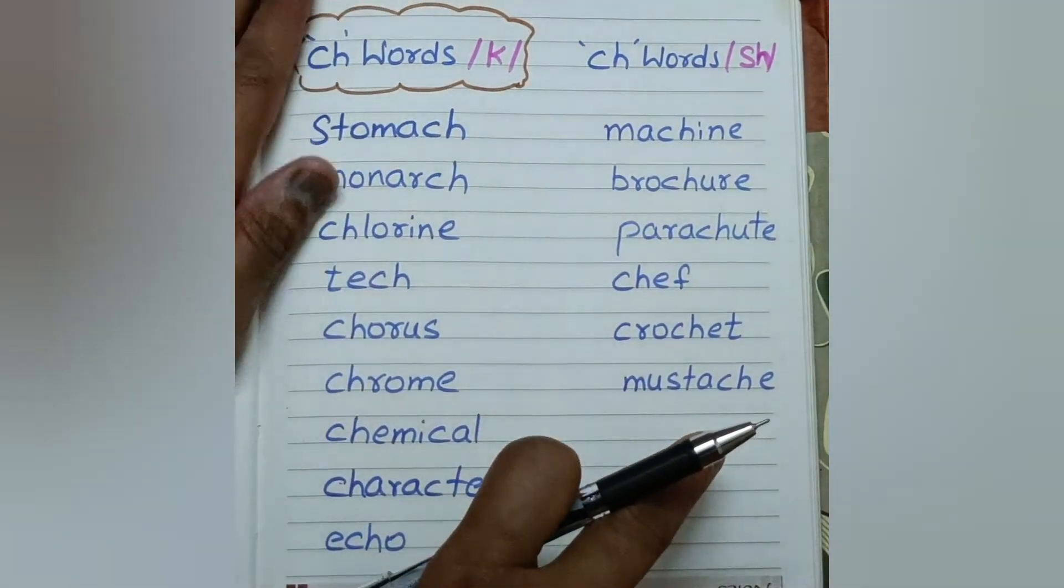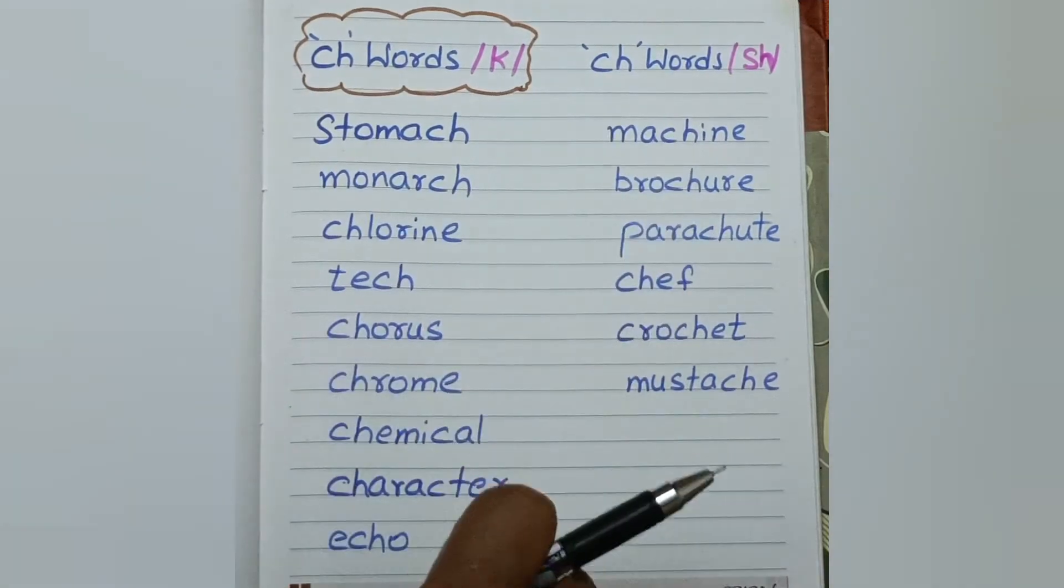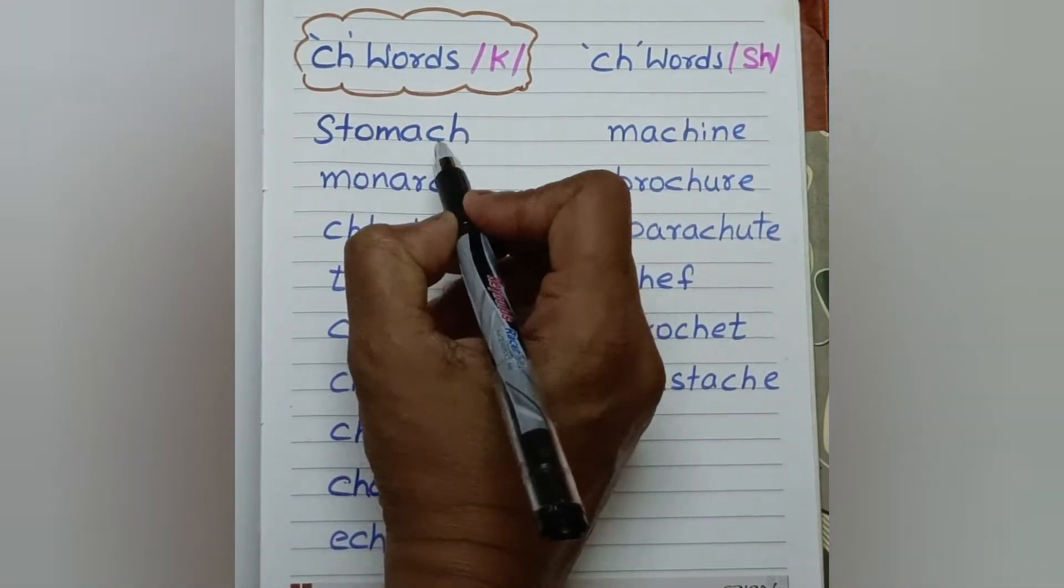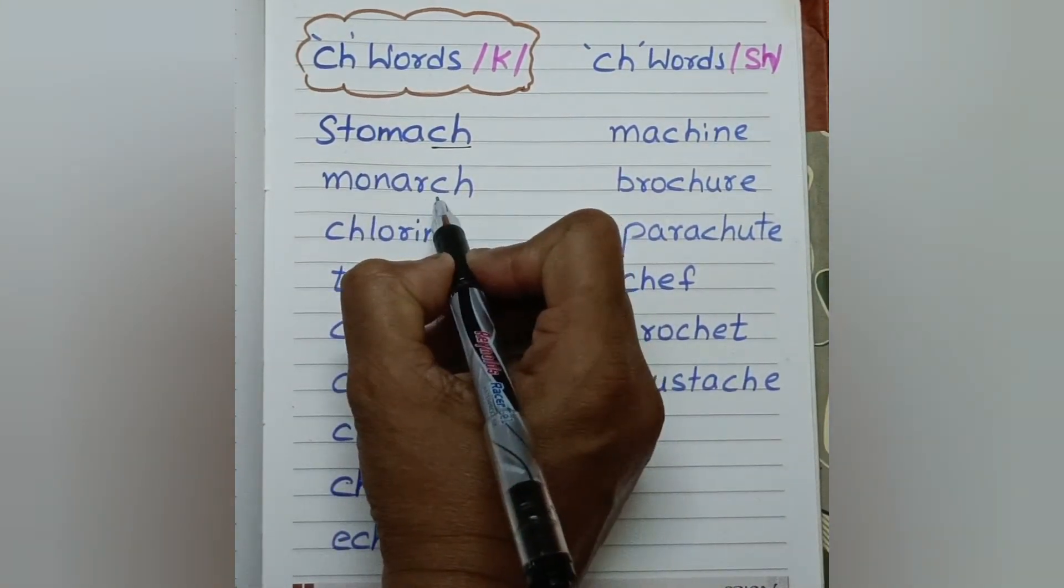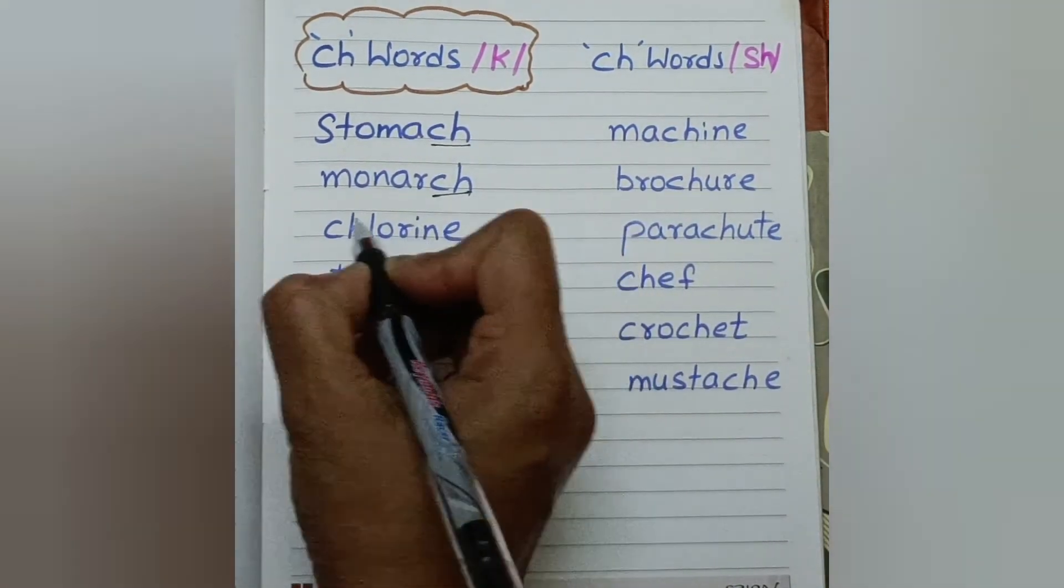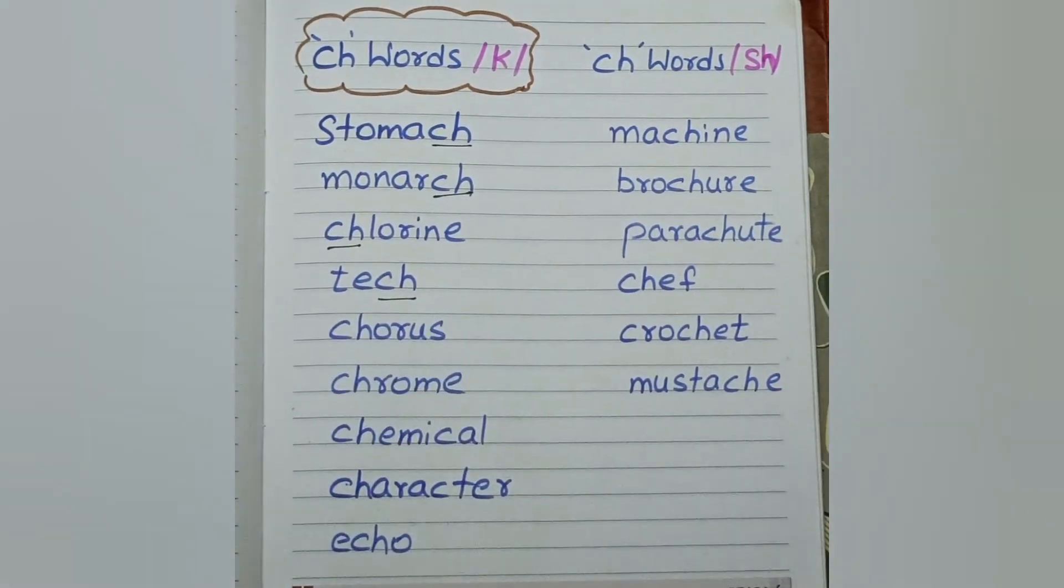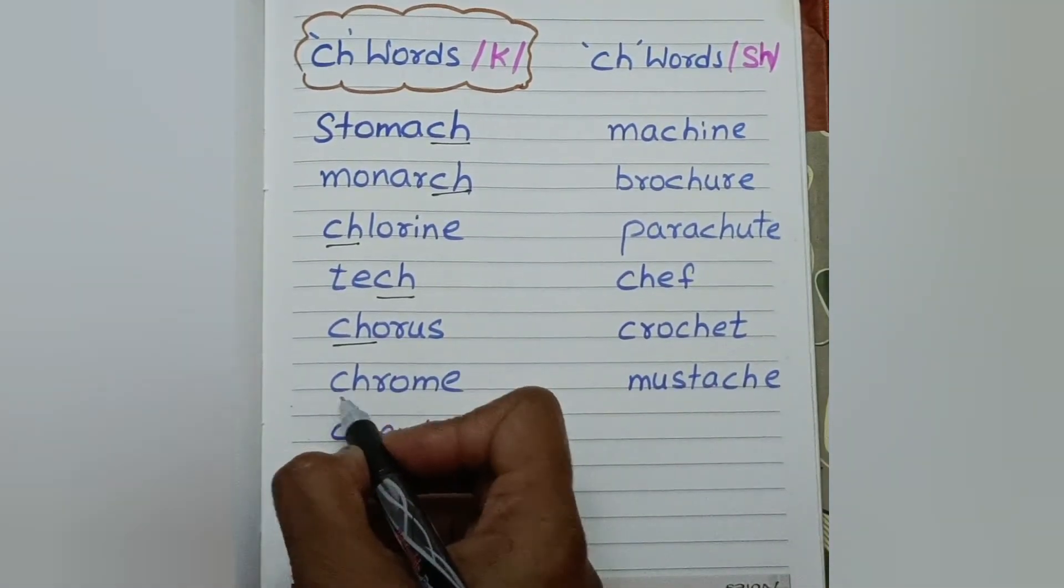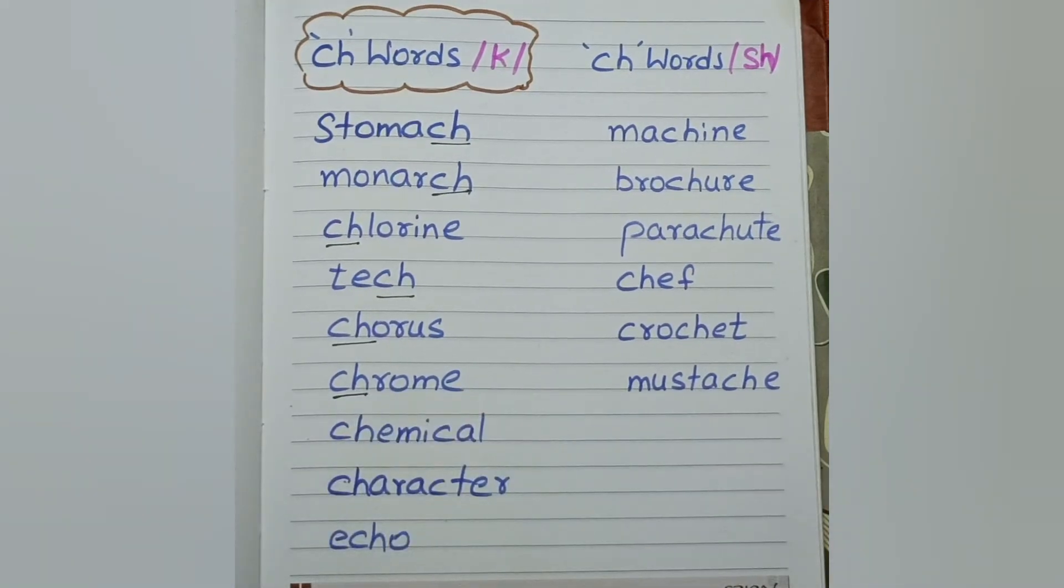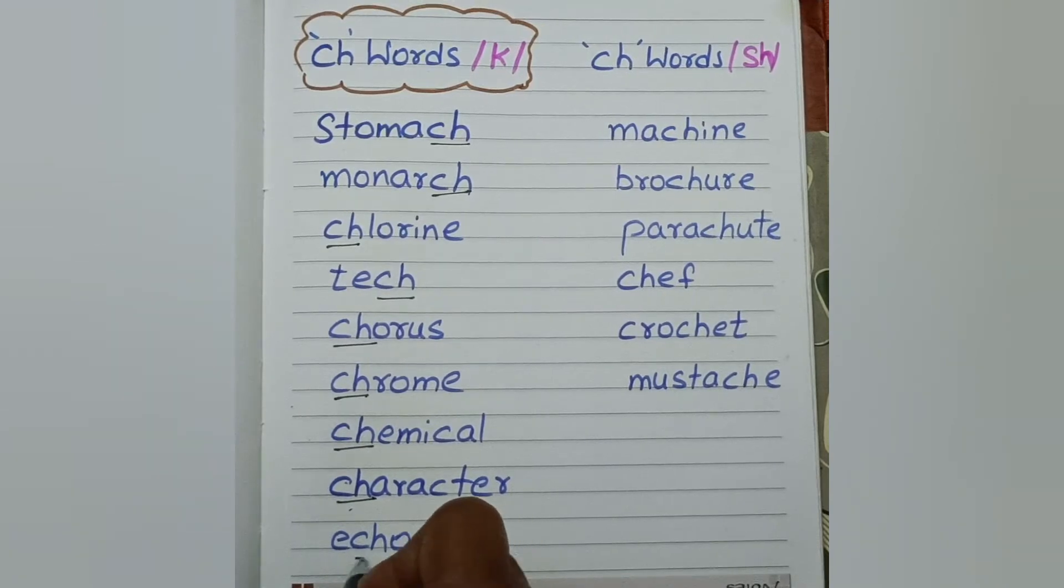And here is the list of K sound. CH sound is K in these words: monarch, chlorine, tick, chorus, chrome, chemical, character, and echo.